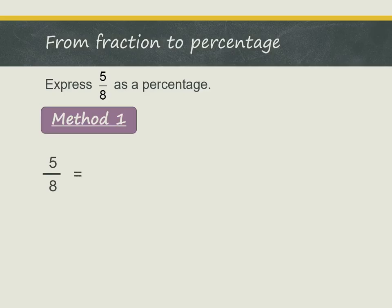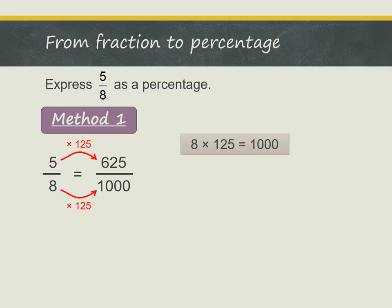We can recall the fact that 8 times 125 equals 1000. So we can convert 5 eighths into an equivalent fraction with 1000 in the denominator. That means we multiply the denominator and numerator by 125 to get the fraction 625 out of 1000.